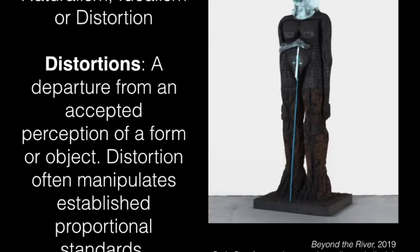Finally, we have distortion — a departure from an accepted perception of form or object. Distortion often manipulates established proportional standards. This piece is called Beyond the River by Huma Bhabha. We see cork, wood, and foam — it kind of looks like a totem pole. I see an animal, a machine, a person — all these different types of figures brought together. The proportions are off. It's striking and strong looking, but I don't know how this person would even walk or where they're from. A lot of distortion to create this new being or new person.